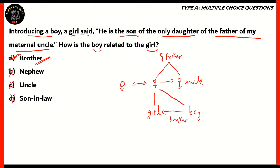Option A — brother — is the right answer. Options B, C, and D are incorrect because uncle would mean he's of a different generation, son-in-law would mean he's from a different family related by marriage, and nephew means the girl would be in an older generation than the boy, which doesn't happen with this particular family construction.